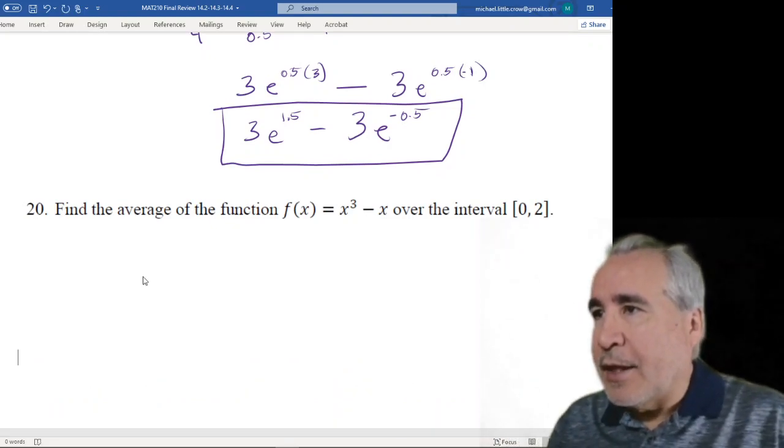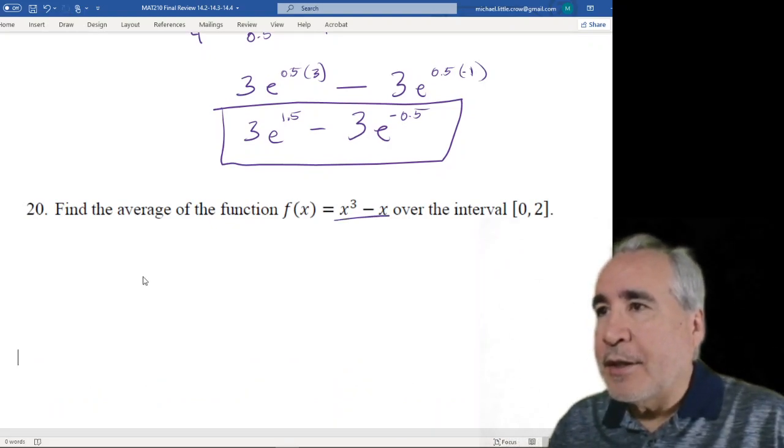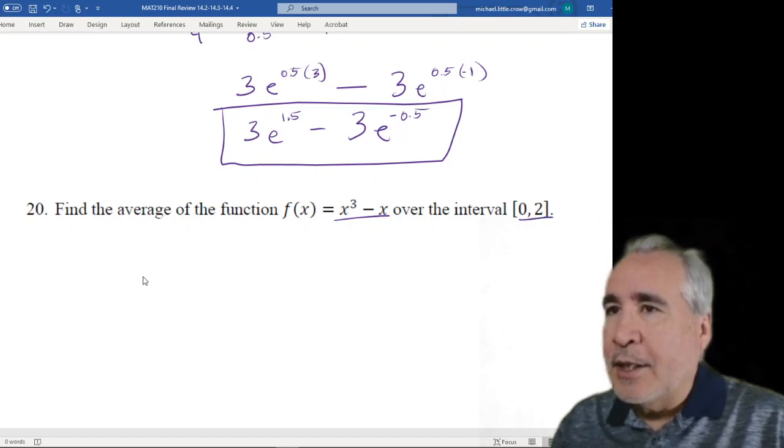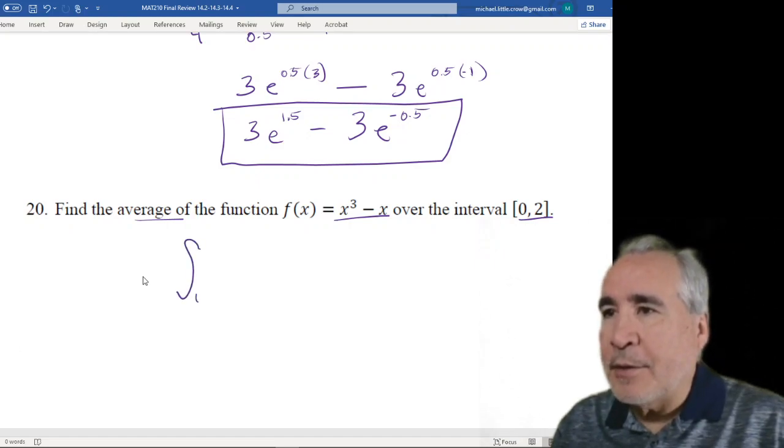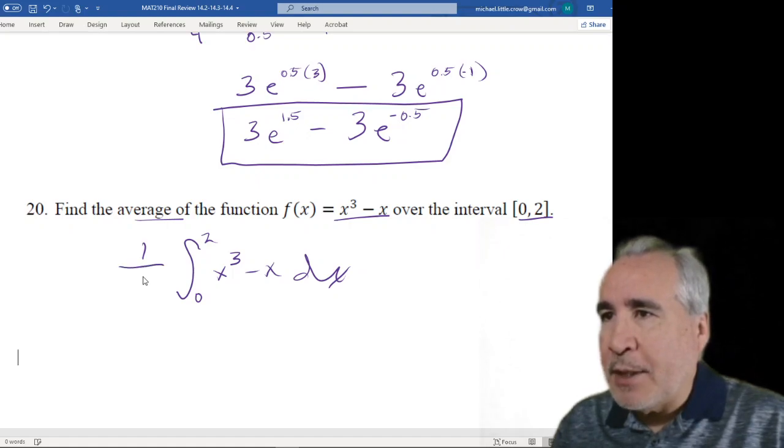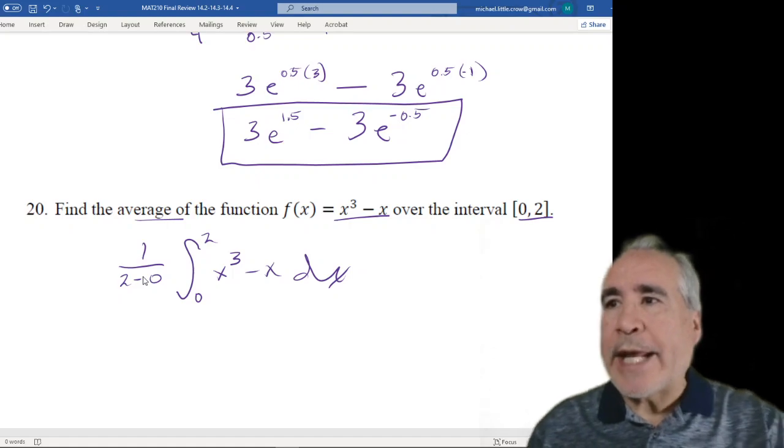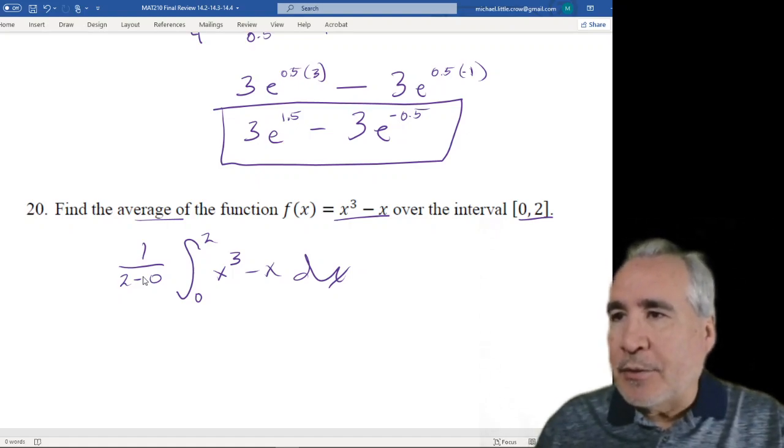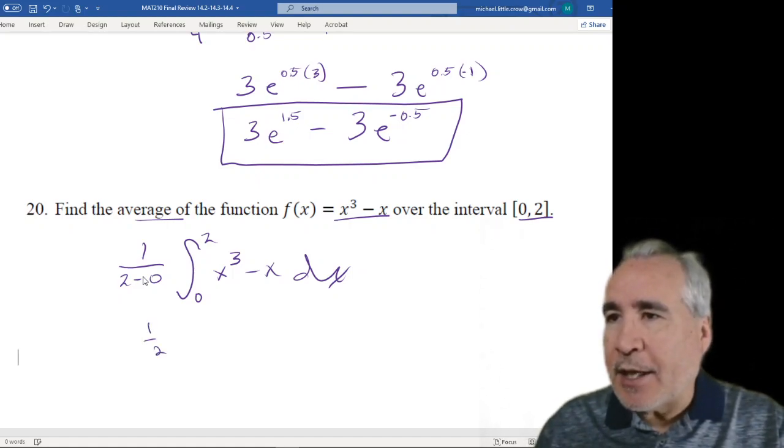Okay, so now we've got this as our function. We're going from 0 to 2, and we want the average. So that's integrating from 0 to 2, x cubed minus x dx, and to get average, we take b minus a. So it's just going to be 1 half, right? So we get 1 half.